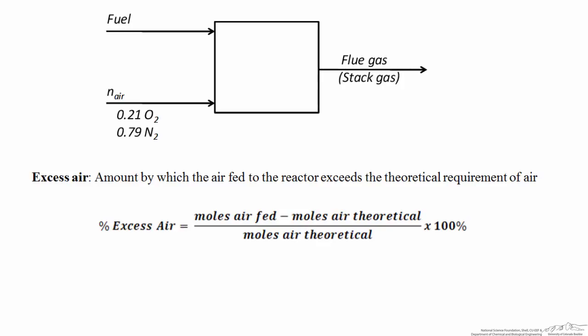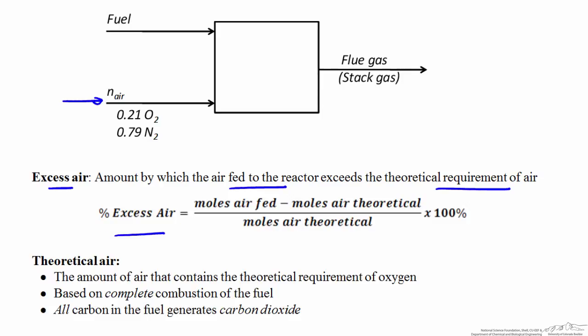To generalize the idea of excess air for any combustion reaction, excess air is defined as the amount by which the air fed to the reactor exceeds the theoretical requirement. Mathematically, the percent excess air equals the moles of air fed minus the moles of air theoretically required to consume all of the fuel, divided by the moles of air theoretically required, times 100%. The theoretical air requirement is based on complete combustion of the fuel, assuming all carbon is completely consumed to generate carbon dioxide.